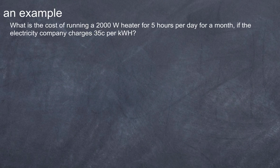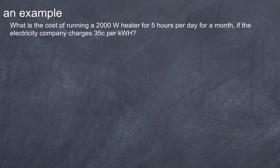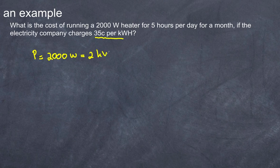What is the cost of running a two-thousand-watt heater for five hours per day for a month, if the electricity company charges 35 cents per kilowatt-hour? If you wanted to stick to SI units you'd say that's 2000 joules per second, then work out how many seconds in an hour and multiply it all out. But being charged in kilowatt-hours makes this really easy. The power of the supply is two thousand watts, which equals two kilowatts.